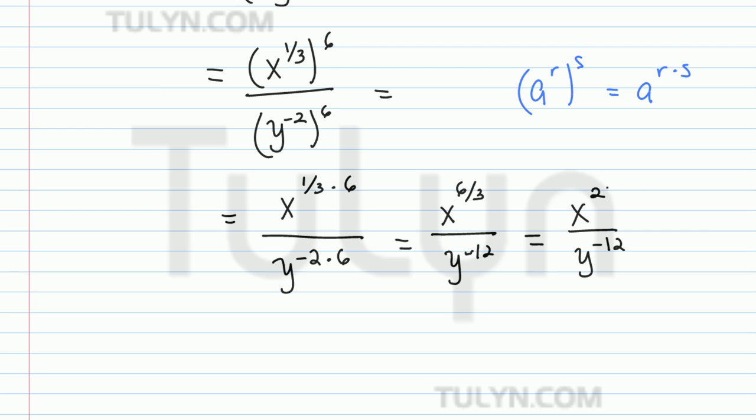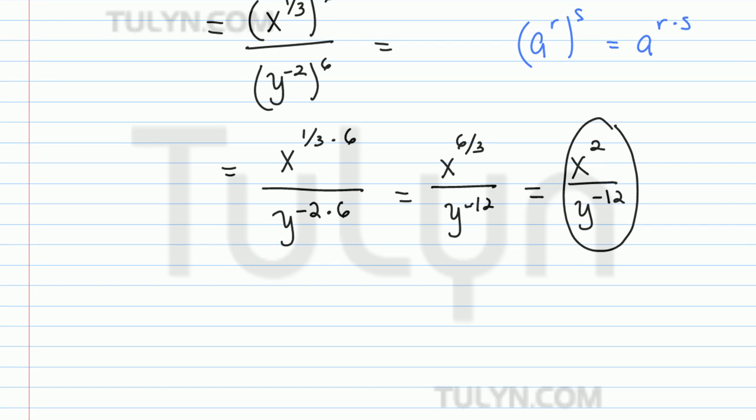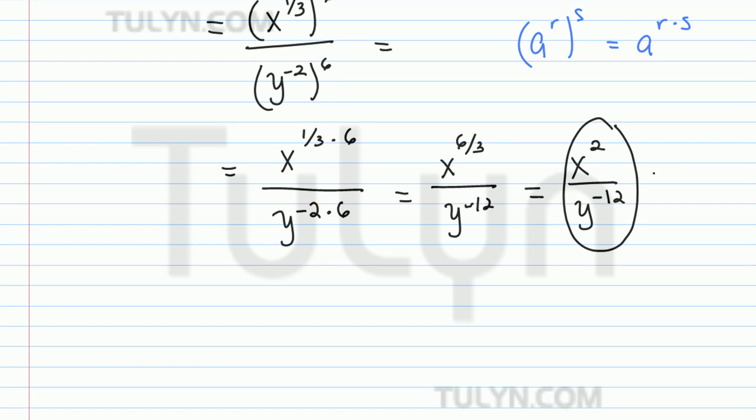So now, you can leave it like this, but in general, we prefer not to have negative exponents. So what you can do is use the rule where any number taken to a negative exponent is 1 over the reciprocal of that number taken to the positive exponent. So the negative, all it does is that it gives you the reciprocal.